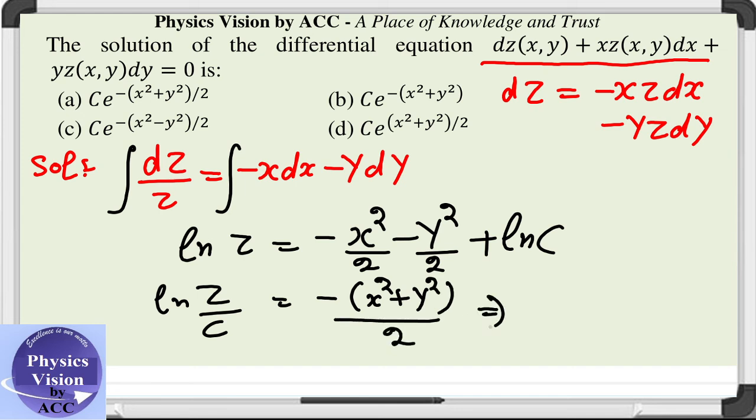That means the value of z will be equal to c times e raised to the power -(x² + y²)/2. That is our option, option a.